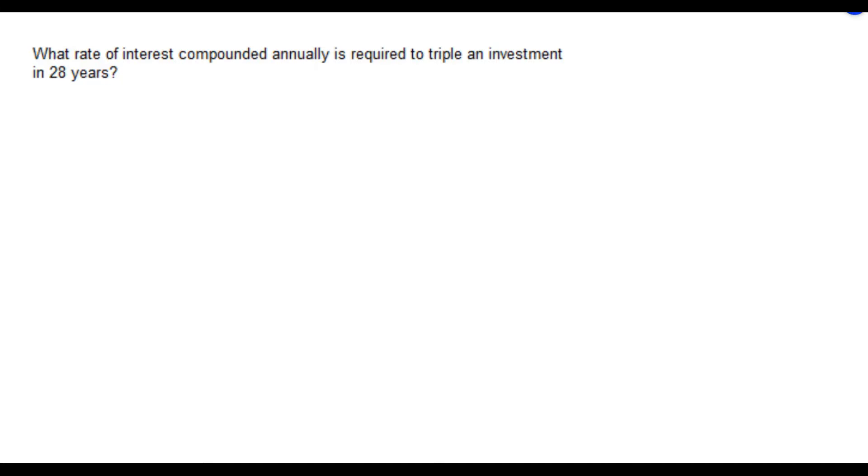First, I want to start with this piece of information in the problem that our interest is compounded annually. That tells me what formula to use. I'm going to use the formula A equals P times 1 plus R over N to the NT.